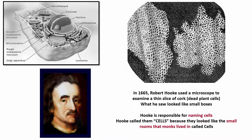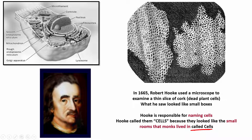If you look at where cells originate: in 1665, Robert Hooke used a microscope to examine a thin slice of cork — dead plant cells — and what he saw looked like small boxes, as you can see in this image. At that time, monks lived in small rooms similar to these boxes, and they called them cells. That is how Hooke came up with naming these small boxes as cells.